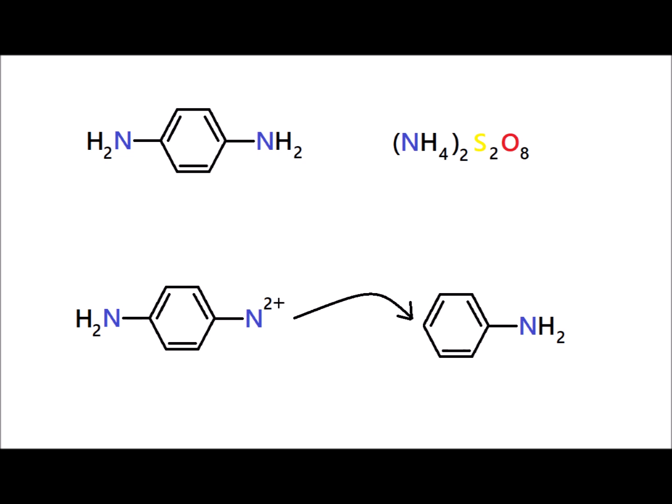When synthesizing the oligomers, particularly the trimers, we use 1,4-phenylenediamine as our central unit and react it with ammonium persulfate, which is a strong oxidizing agent that converts the phenylenediamine into an excellent electrophile. We can exploit the fact that it will undergo electrophilic aromatic substitution, since aromatic amines are strongly activated towards substitution.